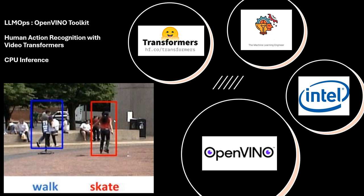We extract features from every individual frame using the spatial transformer, and then we stack 16 consecutive frames. Once we pass this stack through the encoder, we produce a prediction. The encoder has two components: the spatial transformer to extract features and the temporal transformer which captures the relations between the different frames in each stack, which then becomes the input of the decoder.